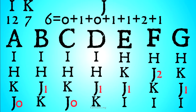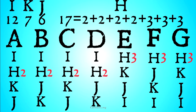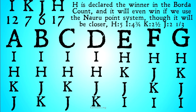J is going to get six points: four third-place votes for one point each, one second-place vote for two points, and two last-place votes for zero points each. And finally, H is going to get a whopping 17 points: three first-place votes for three points each, and four second-place votes for two points each. H is declared the winner in the Borda Count, even though all our other systems would pick I because I has more first-place votes.